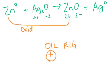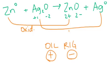And then I can match up the silvers here and see it went from plus one to zero. Reduction is gain of electrons, which always leads to a more negative oxidation number. And so I could say that zinc was oxidized and I could say that silver plus was reduced just from the oxidation numbers.